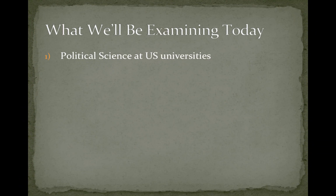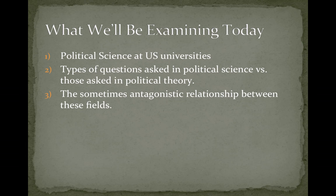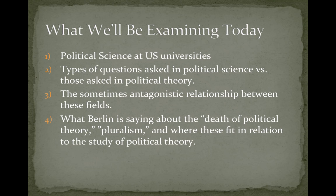In order to talk about the types of questions that political theory asks, we have to talk about political science at universities in the United States — its fields and structure. We'll talk about the types of questions asked in political science versus those asked in political theory, and the sometimes antagonistic relationship between them. We'll then bring it full circle by discussing Isaiah Berlin's piece on the death of political theory, pluralism, and where his analyses fit in relation to the study of political theory.